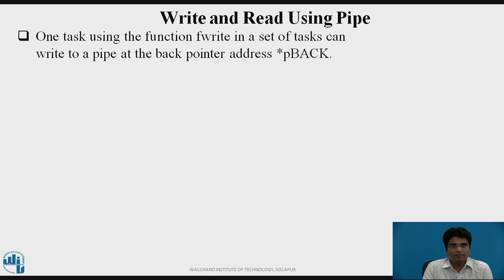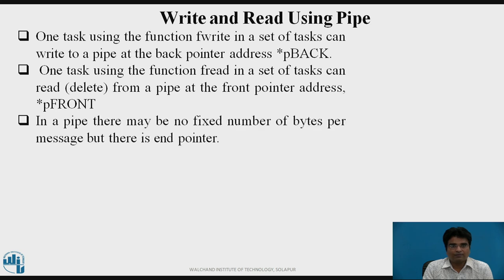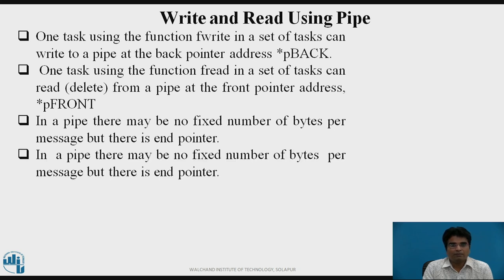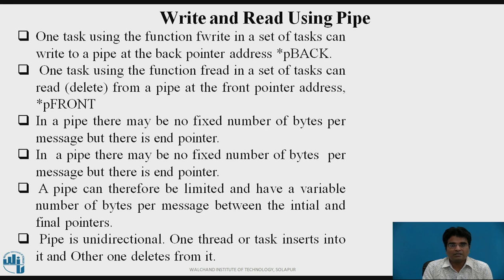Write and read using pipe: One task using the fwrite function can write to a pipe at the back pointer address — that is, pointer p_back. One task using fread can read or delete from a pipe at the front pointer address — that is, pointer p_front. In a pipe there may be no fixed number of bytes per message, but there is an end pointer. A pipe can therefore be limited and have a variable number of bytes per message between the initial and final pointers. A pipe is unidirectional: one thread or task inserts into it and another deletes from it.